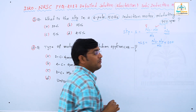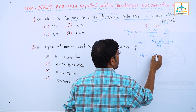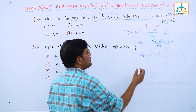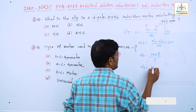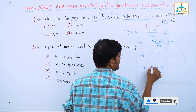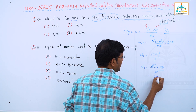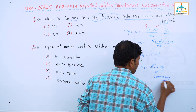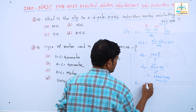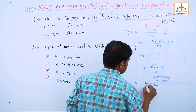We find Ns using the formula: Ns equals 120f divided by P. Here f is supply frequency and P is number of poles. So Ns equals 120 times 50 divided by 6, which gives Ns equal to 1000 RPM. Then slip equals Ns minus Nr divided by Ns, which is 1000 minus 950 divided by 1000.